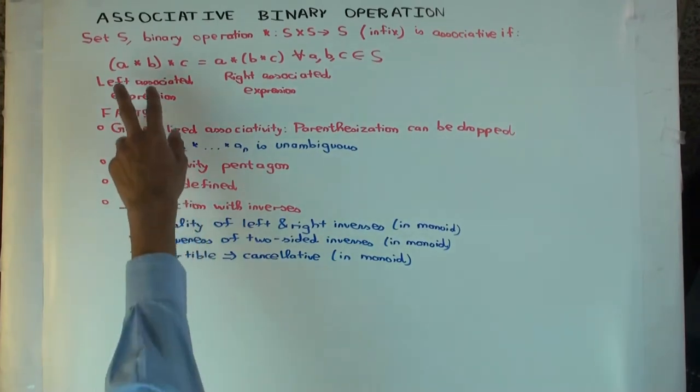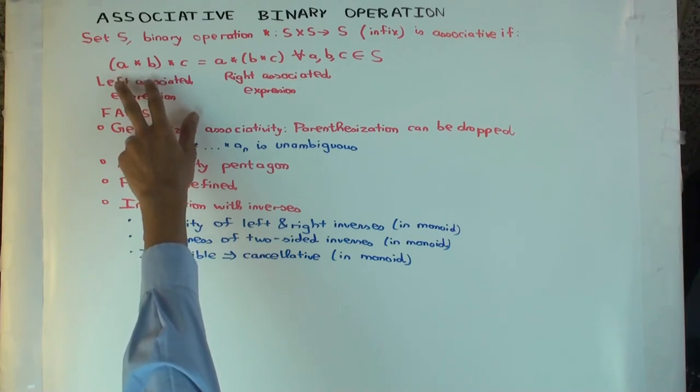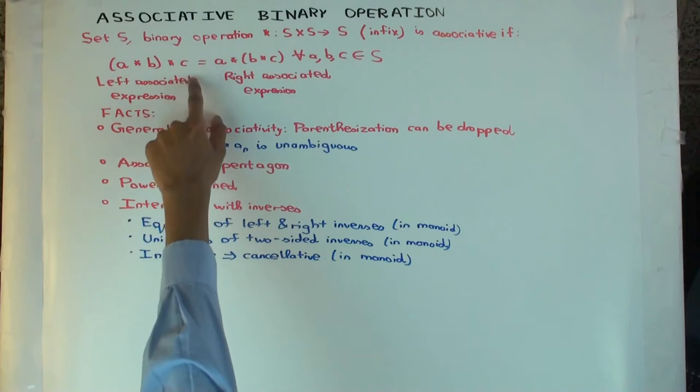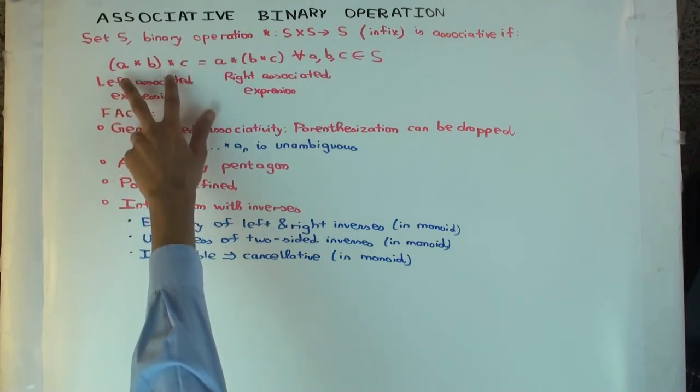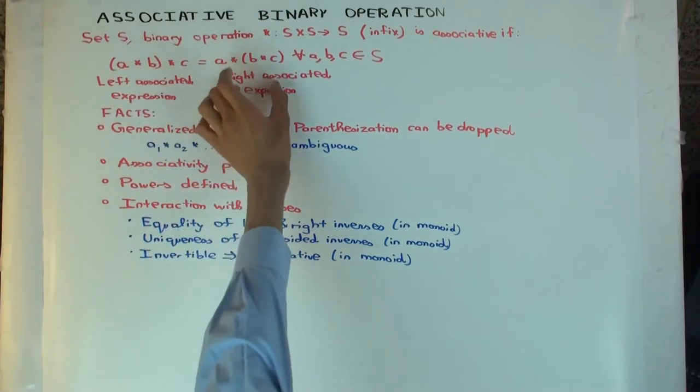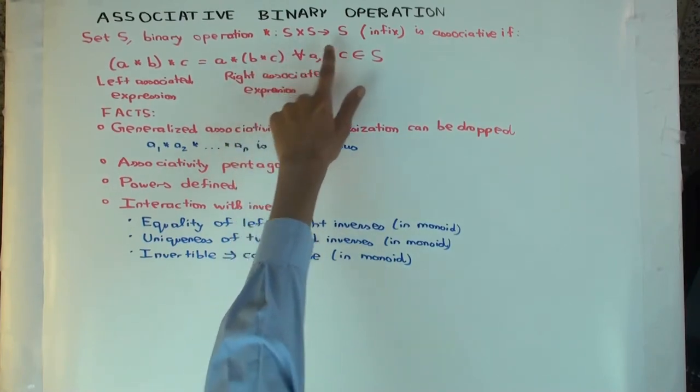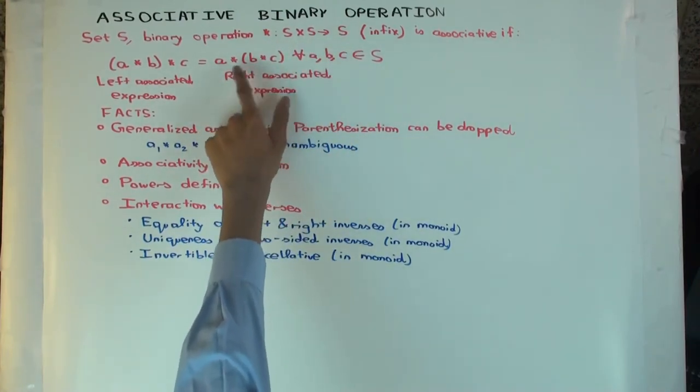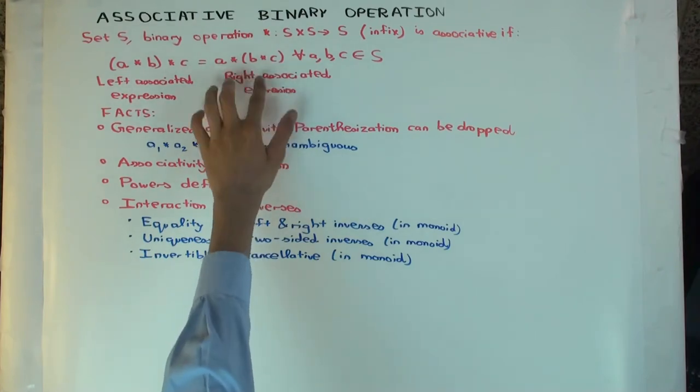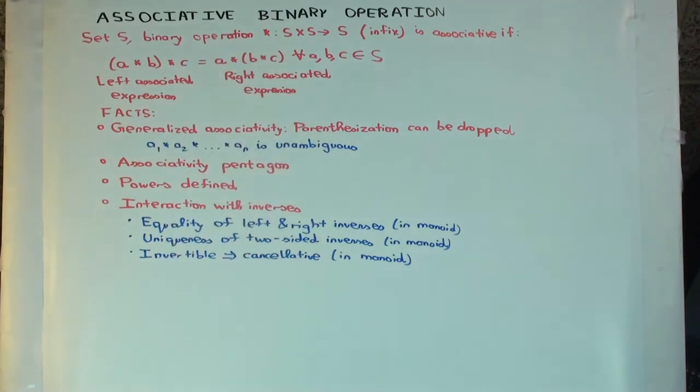Now what does this really mean? Well, how do you interpret this? You first do A star B. A and B are both elements of S, so A star B is also an element of S. Then you star that with C. The right side is also, you first do B star C. Inputs are both from S, so output is in S. Then you do A star with that. So both inputs are in S, output is in S, and then that's an element of S. And then the equality is as elements of S.